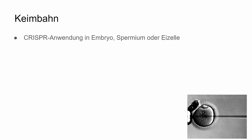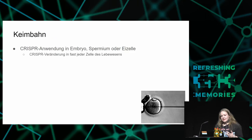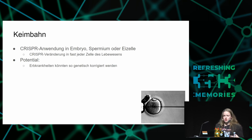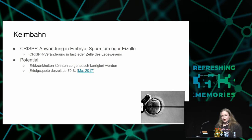Now the really interesting part: editing inherited DNA directly — like an embryo, sperm, or ovum. In that case, the change induced via CRISPR will be in almost all cells of the resulting being, including all germline cells, so it will be persistent. The potential is that you could genetically fix inheritable diseases, and the human in question would be born healthy. The success quota in embryo tests is right now around 70%.